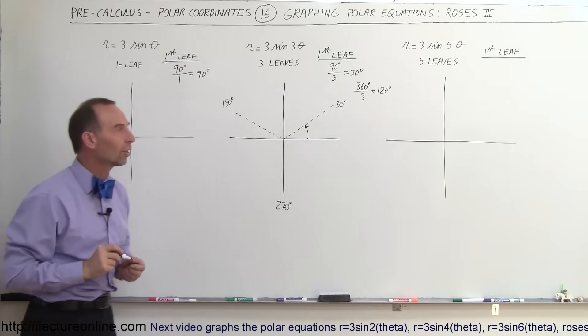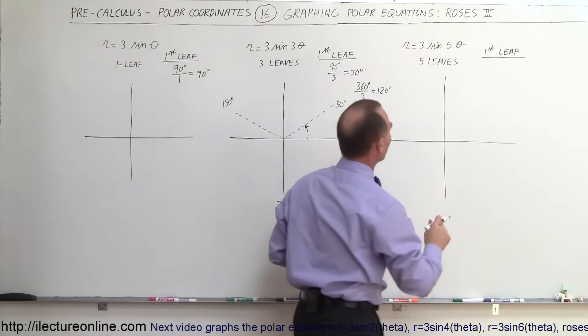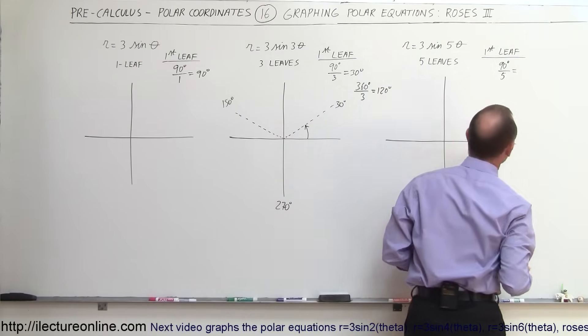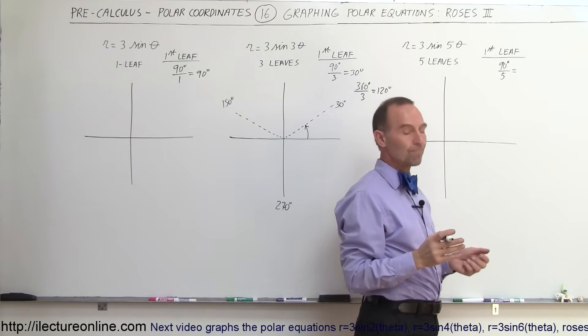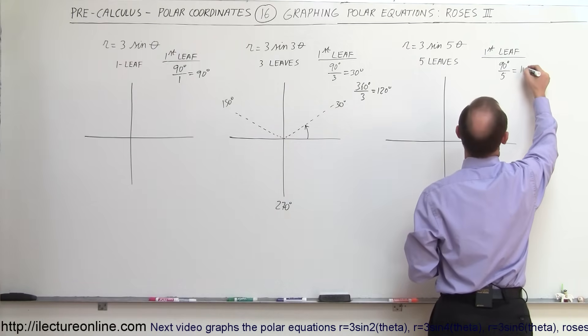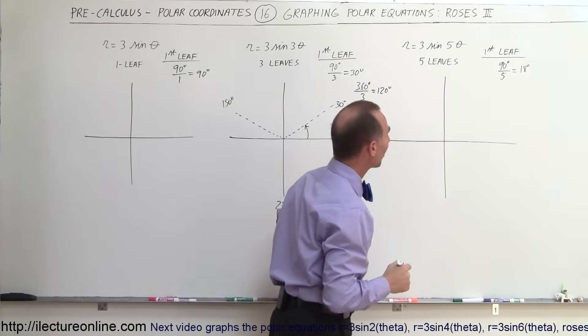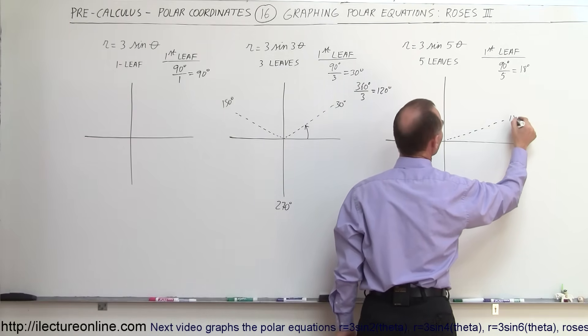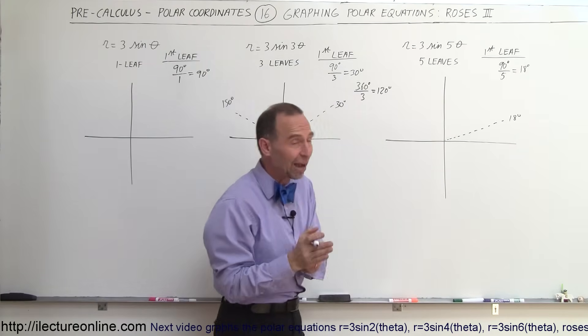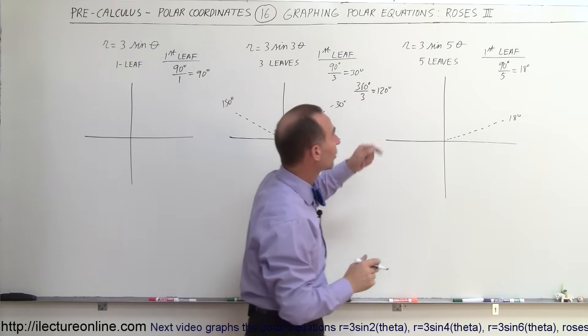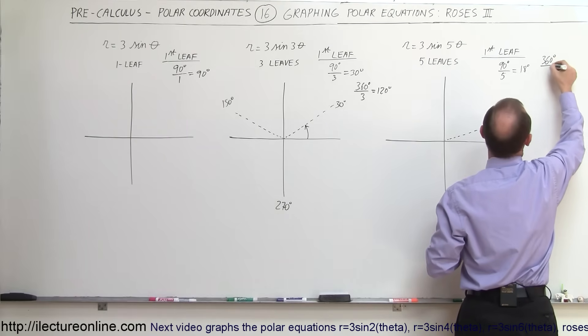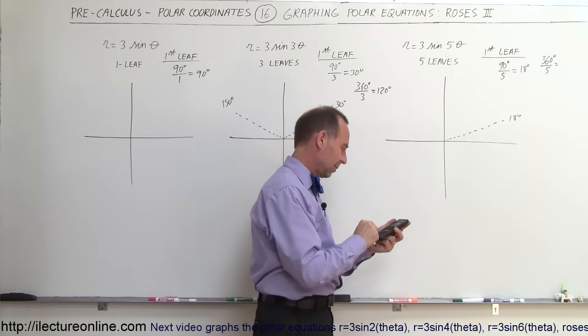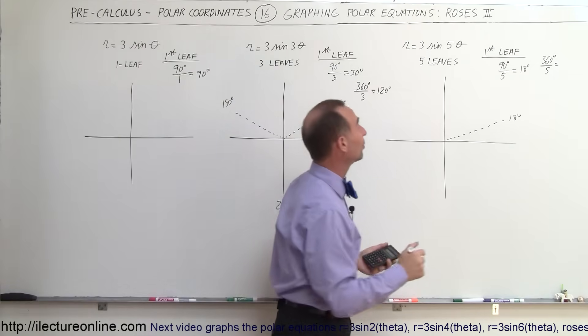In a five-leaf rose, the first leaf is going to be found by taking 90 degrees divided by the number from the angle, which is 5. So 5 goes into 90, that would be 18 degrees. So that means the first leaf would be found at an angle of 18 degrees. Now where are the other leaves? Well there would be five leaves. They're spaced apart in equal angles. So we take 360 degrees and divide it by 5.